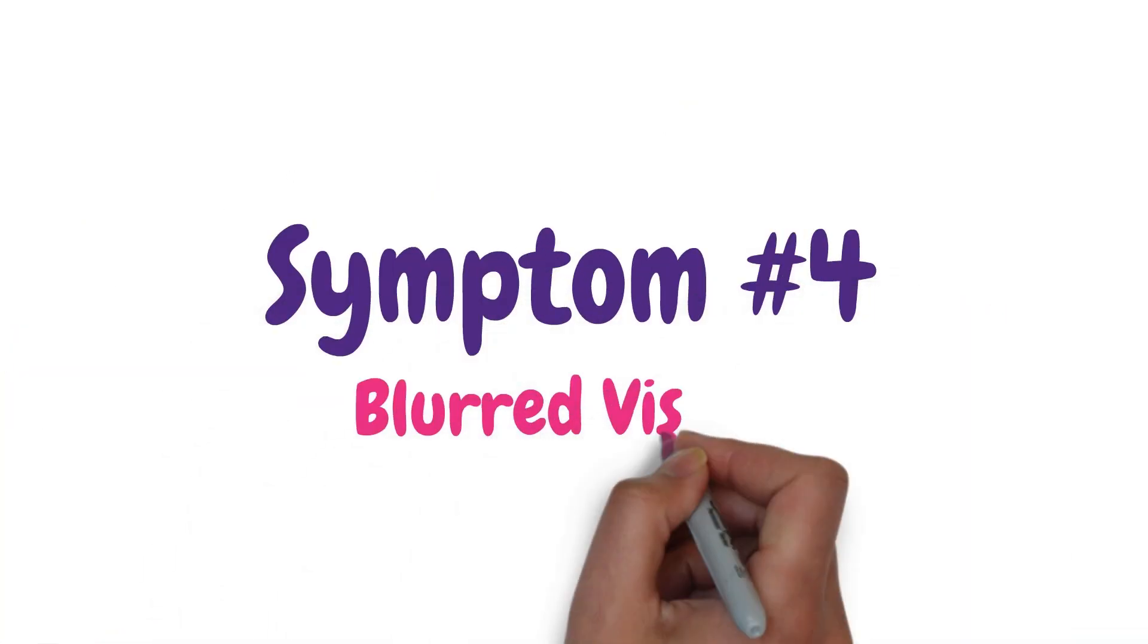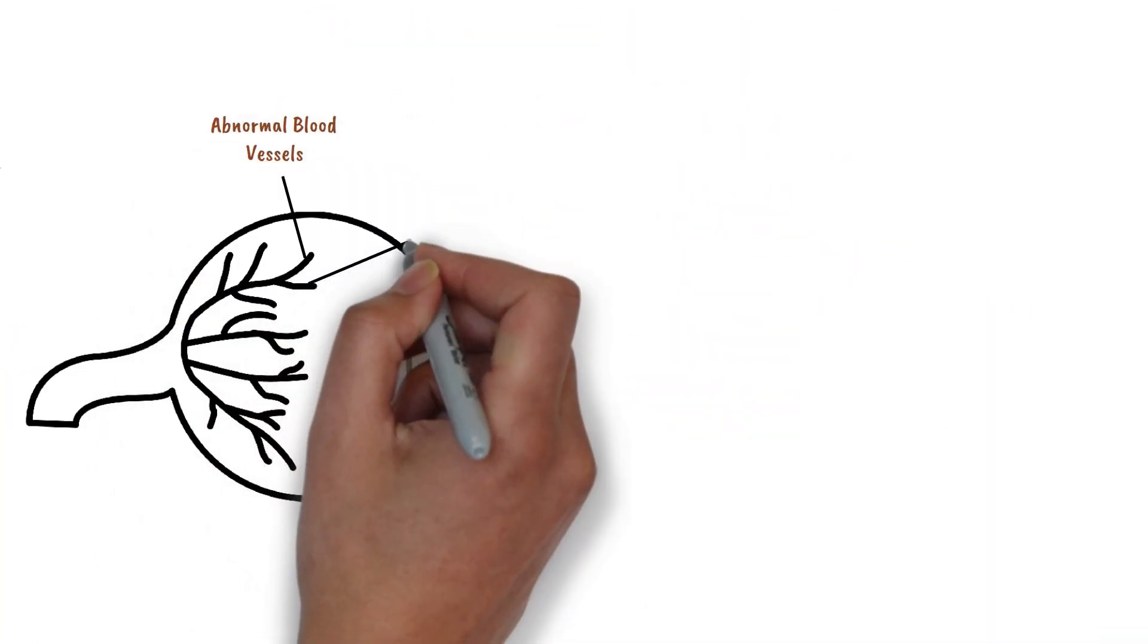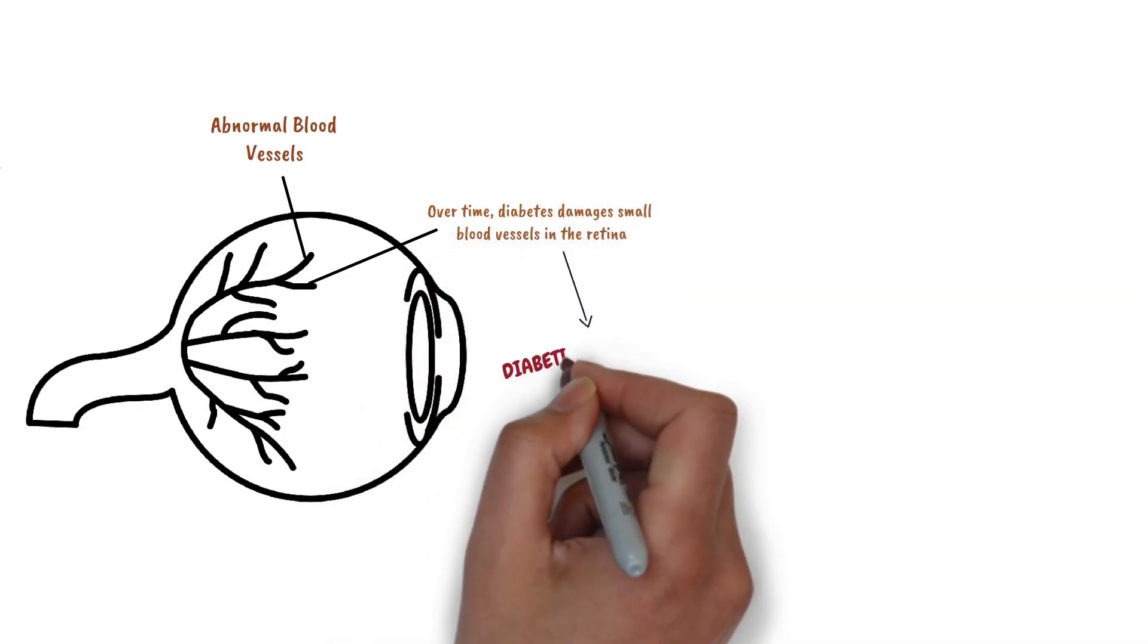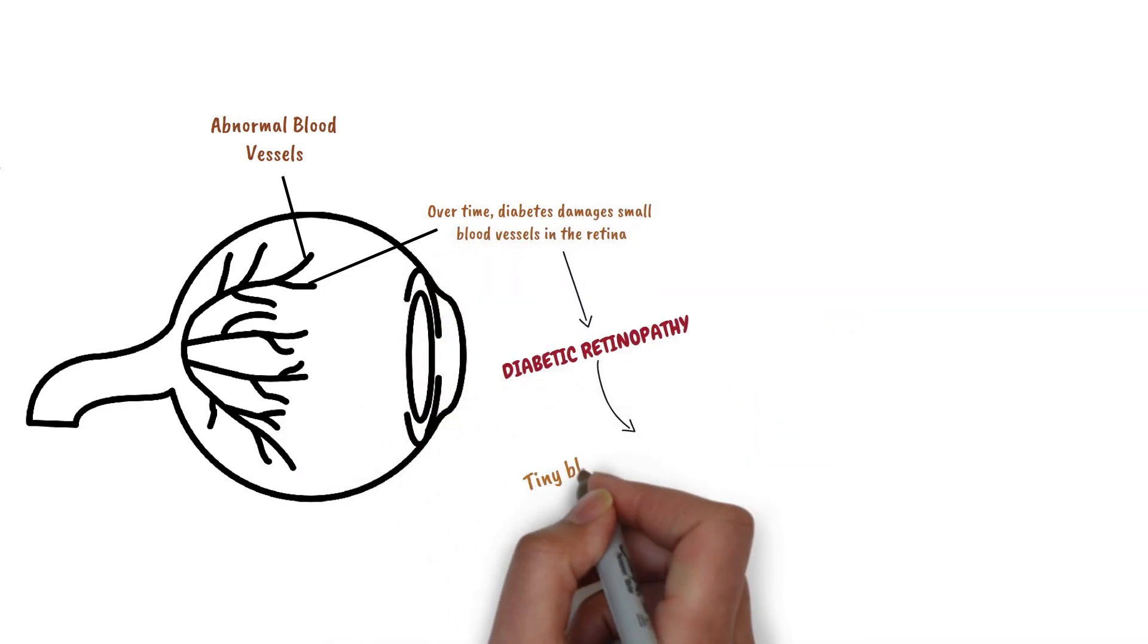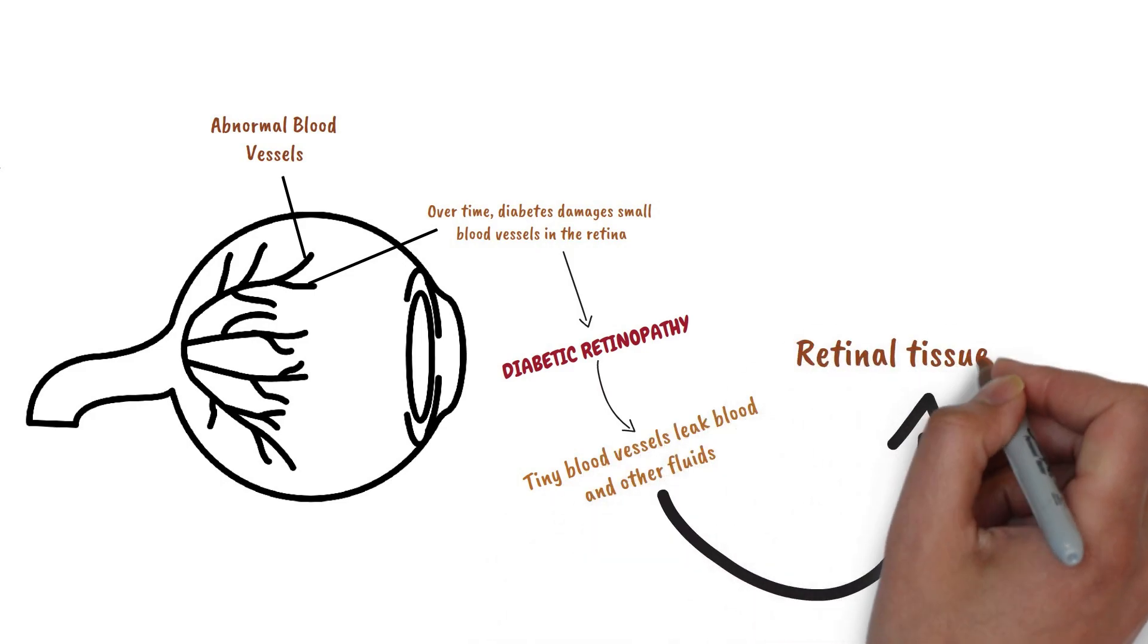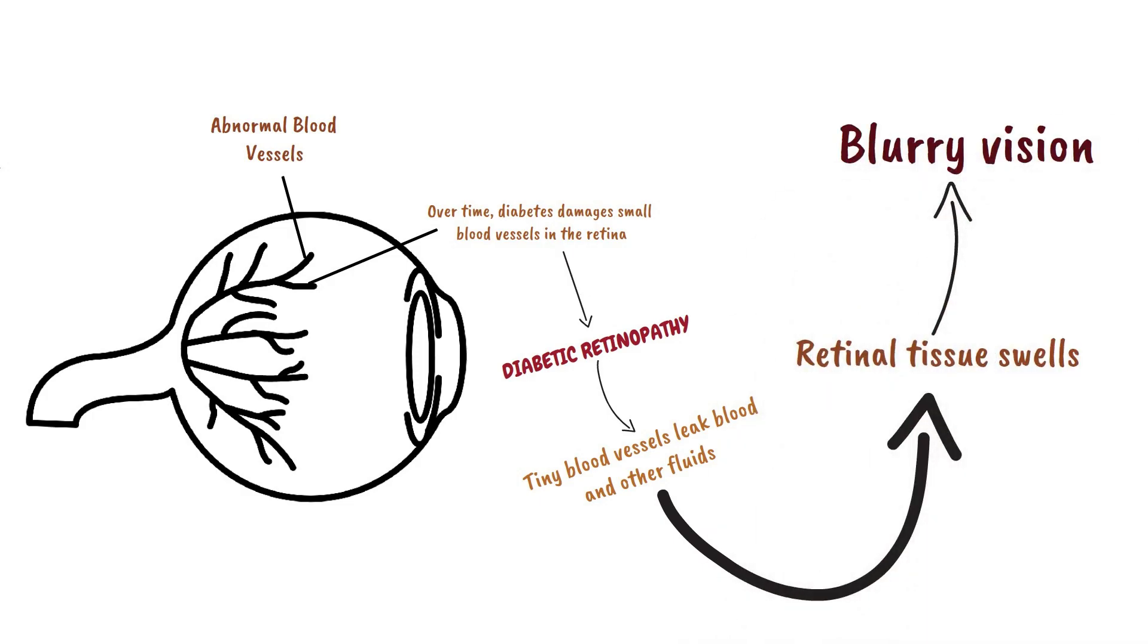Symptom number 4 is blurred vision. Over time, diabetes damages small blood vessels throughout the body, including the retina. Diabetic retinopathy occurs when these tiny blood vessels leak blood and other fluids. This causes the retinal tissue to swell, resulting in cloudy or blurry vision.